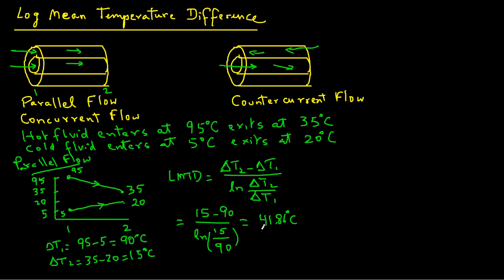Remember, this result — since it is an average — must be between 15 and 90. It cannot be less than 15 or more than 90, because the log mean temperature difference is between those two values. Now we can go ahead and determine the log mean temperature difference for counter flow.